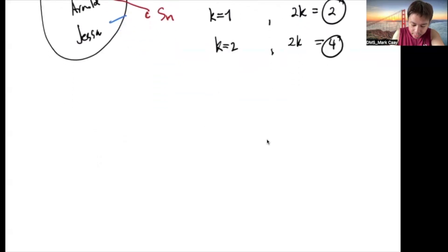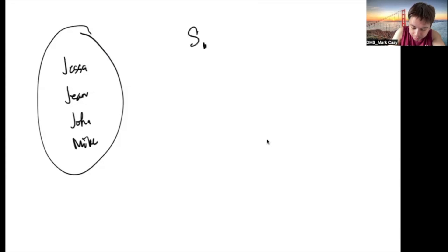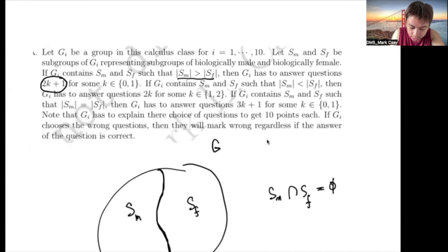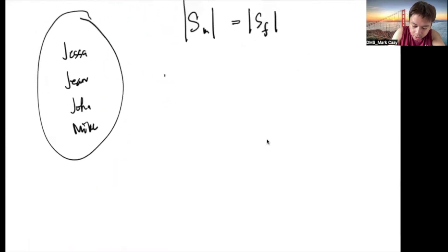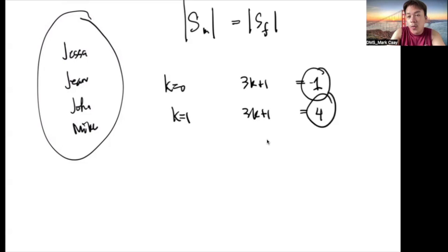What happens when the cardinality of S_M equals the cardinality of S_F? For example, Jessa, Gene, John, and Mike — two female and two male. In this case, the group answers questions 3K+1 for some K from 0 to 1. When K=0, 3K+1=1; when K=1, 3K+1=4. So they answer questions 1 and 4.